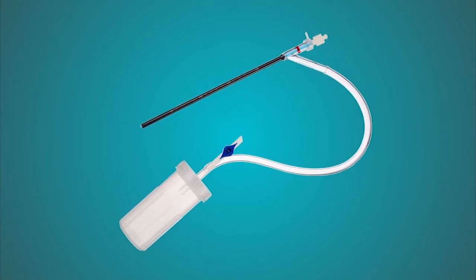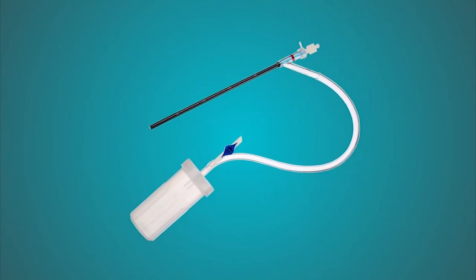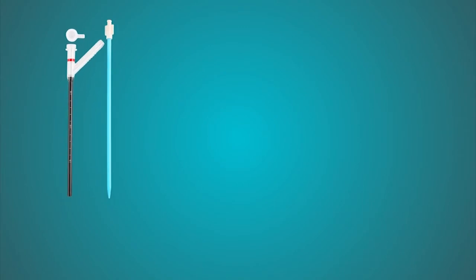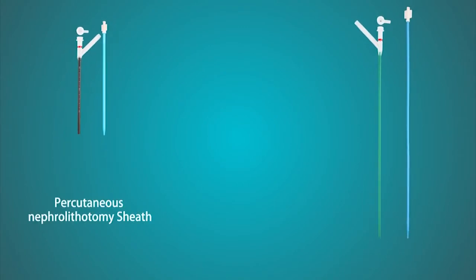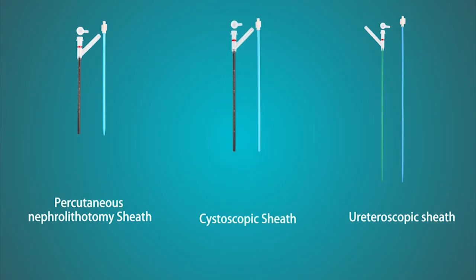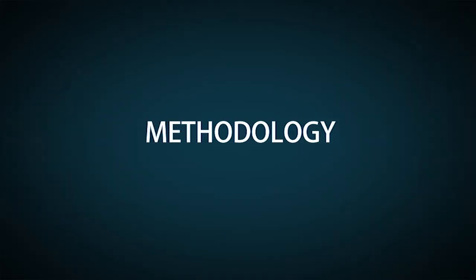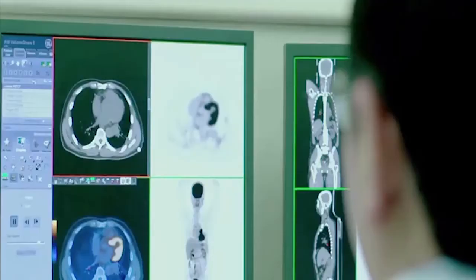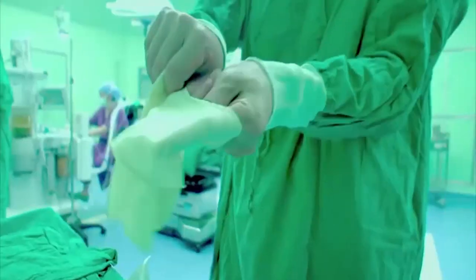Our product line includes the percutaneous access sheath, the ureteral access sheath for the kidney and ureter, and the cystoscopic access sheath. After routine preoperative preparation, select the appropriate sheath according to the stone location and the surgical technique.